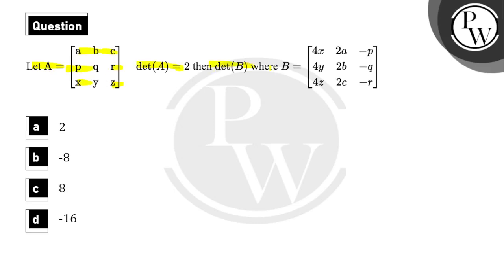The determinant of A is 2, and we need to find the determinant of B, where matrix B is: x, 2a-3, 4y, 2b-q, and 2c-a. Option A is 2, option B is minus 4, option C is some value, and option D is minus 16.